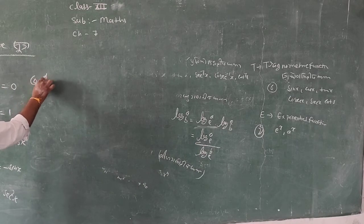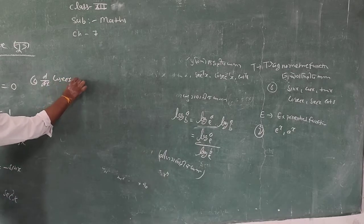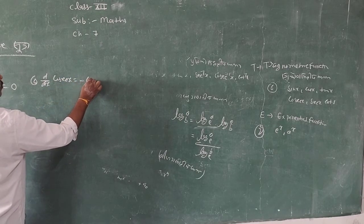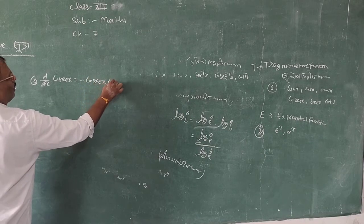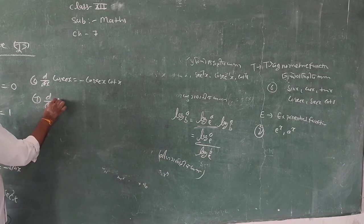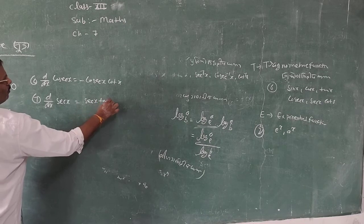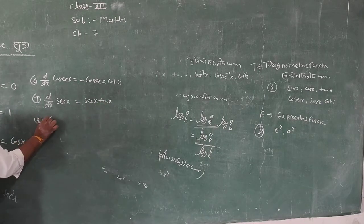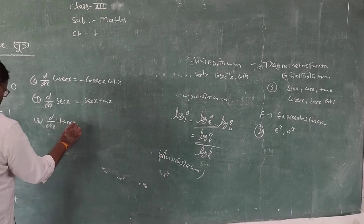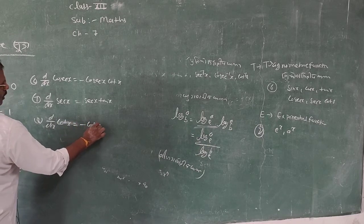Formula 5: Differentiation of tan x = sec² x. Everyone should know these. Formula 6: Differentiation of cot x = minus cosec x · cot x. Formula 7: Differentiation of sec x = sec x · tan x. Formula 8: Differentiation of cot x = minus cosec² x.